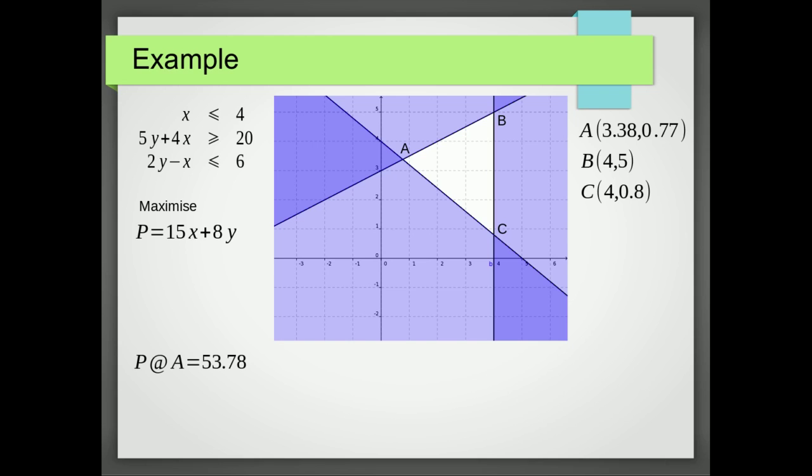So at A, we see that p equals 53.78. At B, we can see it's considerably better at 100. And at C, we can see that p equals 66.4, which is better than A, but not as good as B.